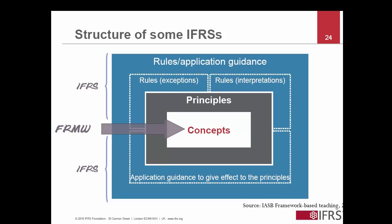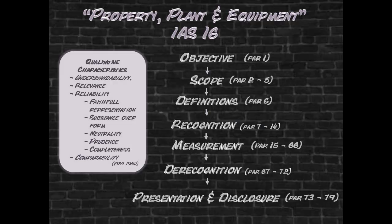Pervasive to the entire process are qualitative characteristics as contained in the framework, on which the standard is based. These qualitative characteristics, together with the other concepts contained in the framework, underlie many of the financial reporting standards. Some of the concepts underlying IAS 16 are highlighted in the remainder of this presentation. IAS 16 exhibits the typical structure of a financial reporting standard, and given that it was originally issued in 1993, the framework of 1989 played a role in its development.